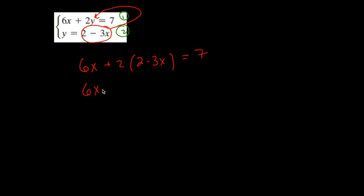Notice I now have an equation of just one variable which I can solve easily. Distribute the 2: 4 minus 6x equals 7. The 6x and minus 6x cancel, so 4 equals 7. I get a false statement.